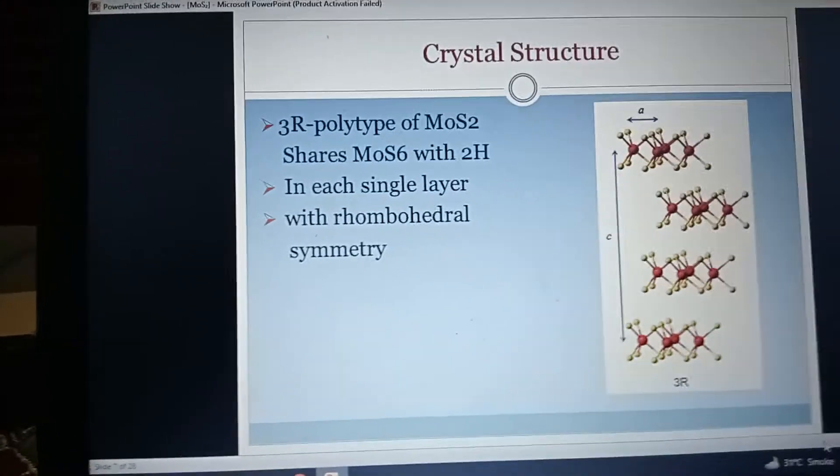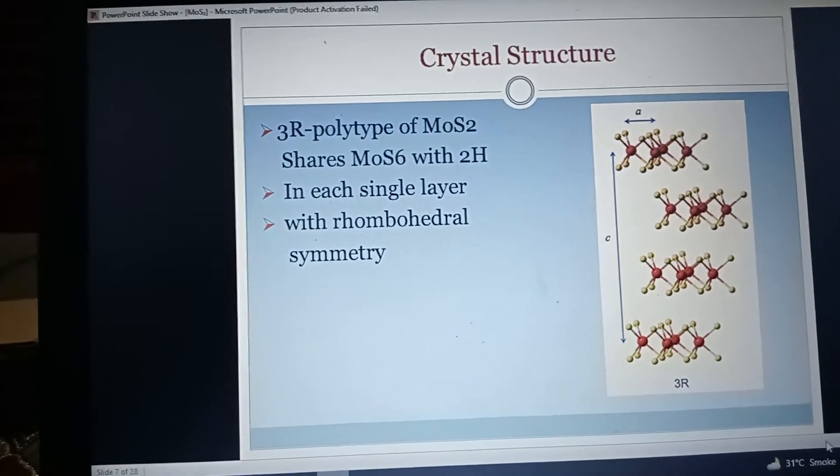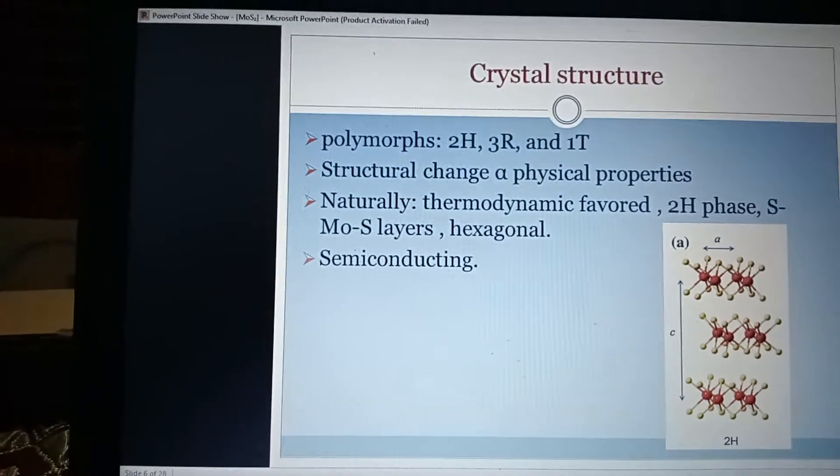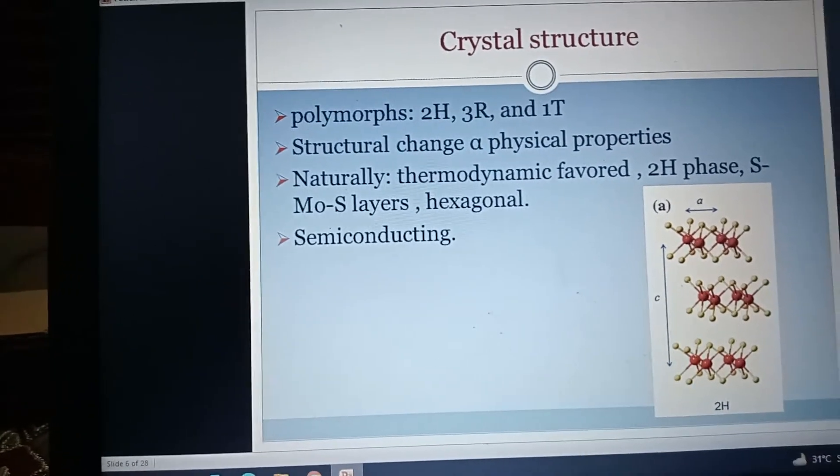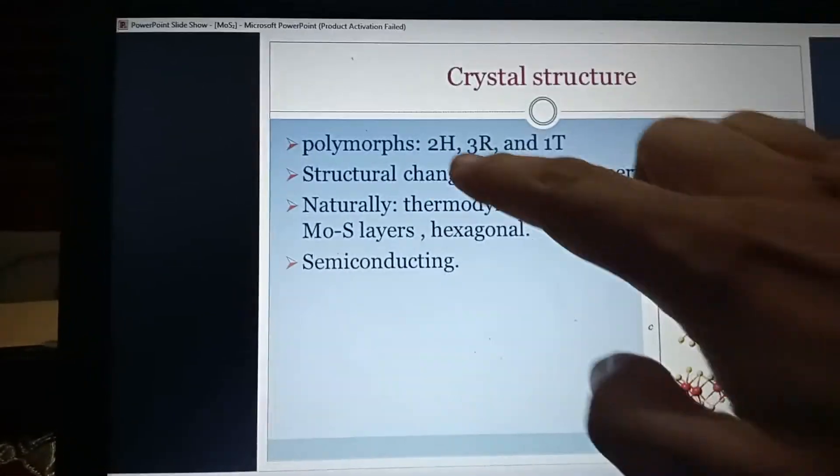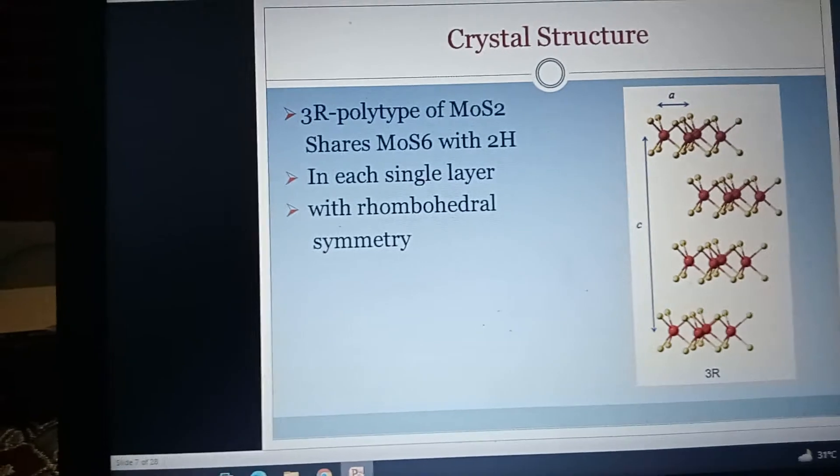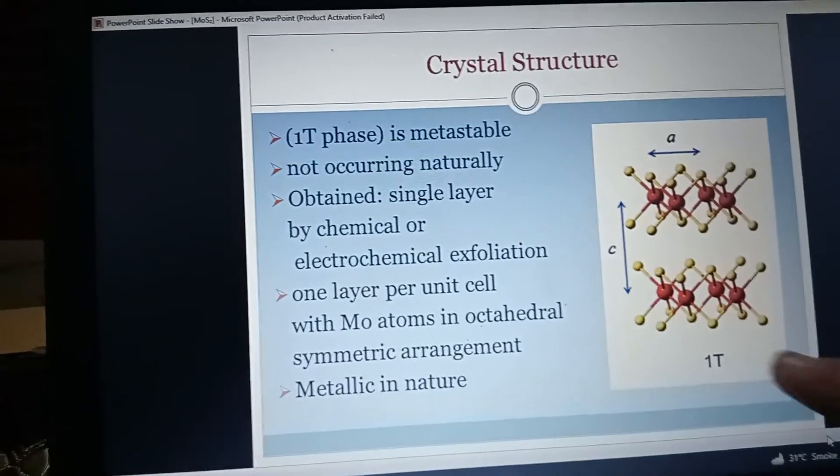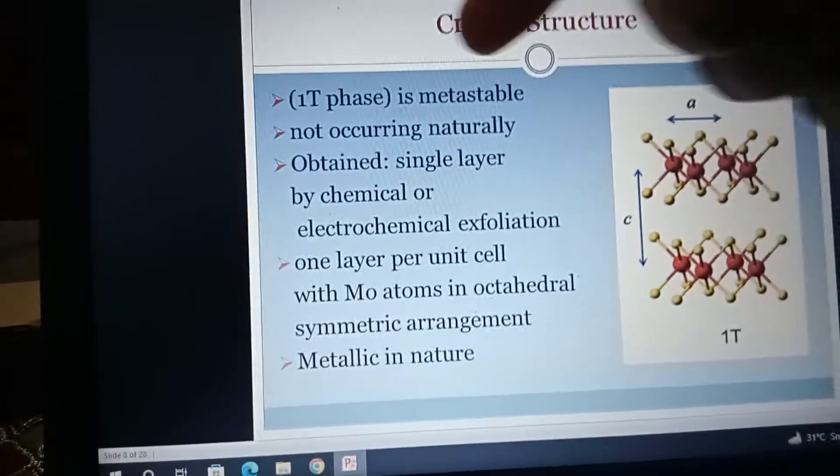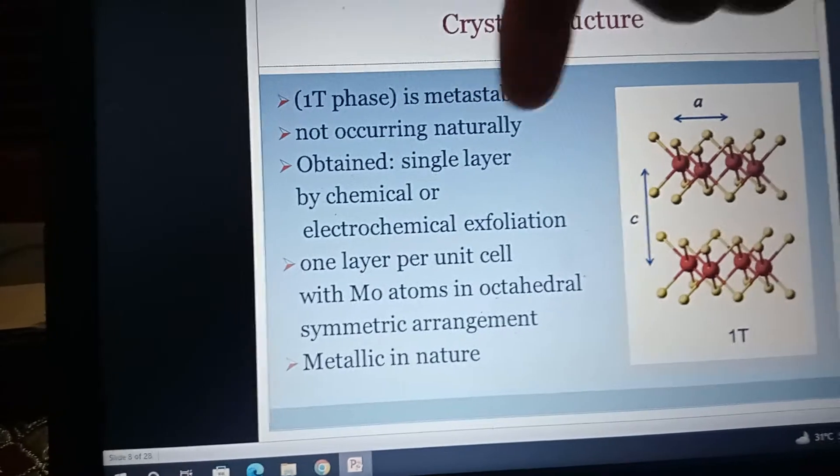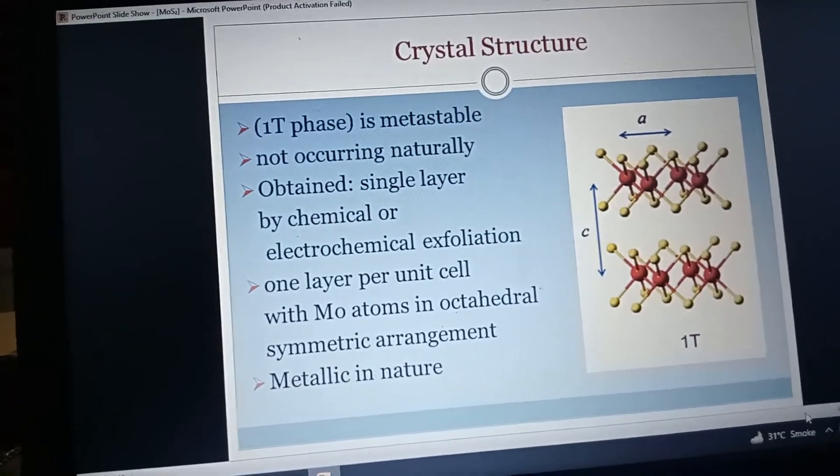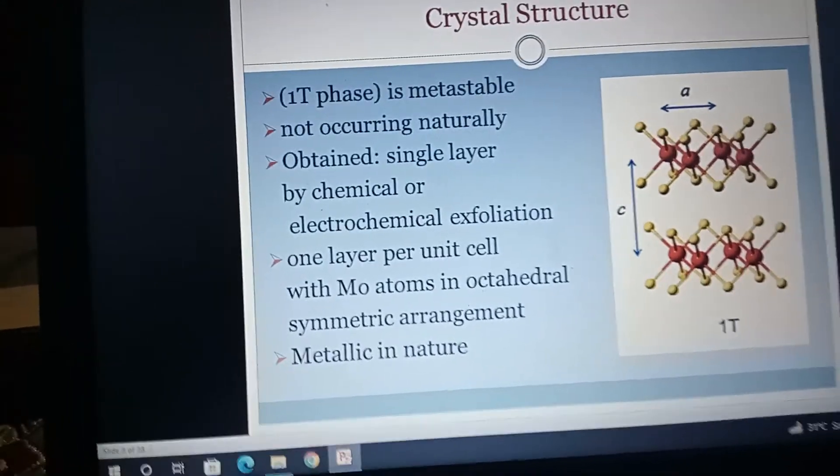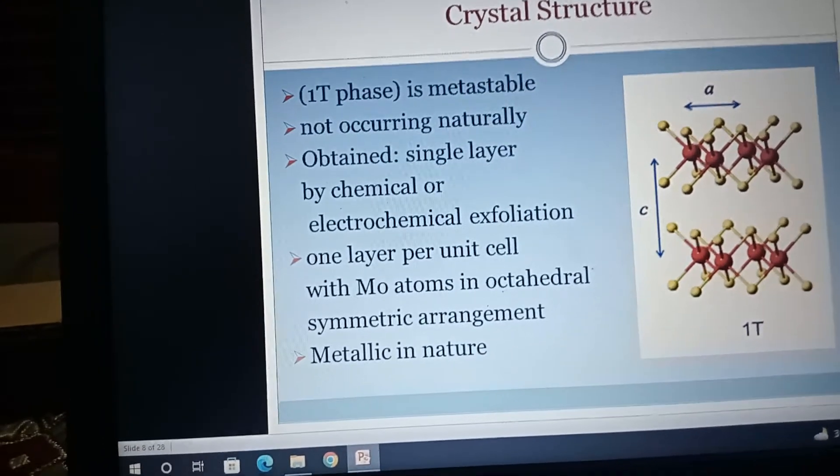3R is another type polytype of MoS2 that shares MoS6 with 2H polymorph type. 1T is metastable, not occurring naturally. It is obtained in single layer by chemical or electrochemical exfoliation, one layer per unit cell with Mo atom in octahedral symmetric arrangement, metallic in nature. 1T, 3R, and 2H.